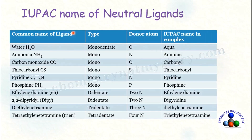Now come to the ligands. Here is a list of IUPAC names of some neutral ligands. For example, water — if water acts as a ligand, it is a monodentate ligand and oxygen is the donor atom. The IUPAC name of water in a complex is 'aqua.' Similarly, for ammonia — ammonia is a monodentate ligand, nitrogen is the donor atom, and its IUPAC name is 'amine.'